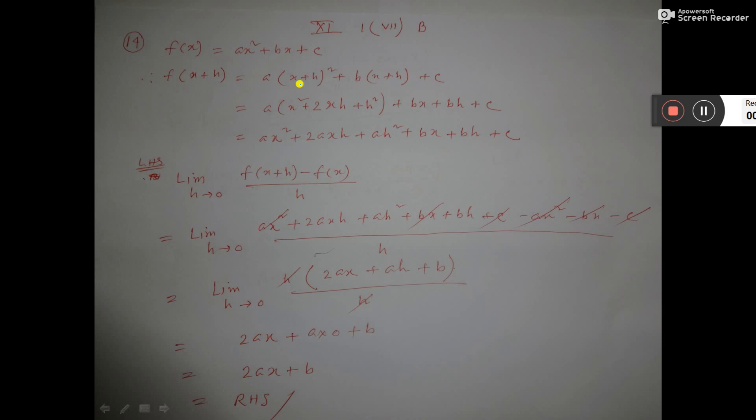Then you break down this a plus b whole square formula: x squared plus 2xb plus b squared. Then take LHS, left hand limit, limit h tends to 0, f(x+h) minus f(x) by h.